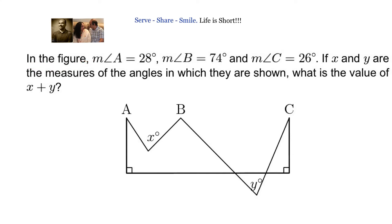In the given figure, angle A is 28 degrees, angle B is 74 degrees, and angle C is 26 degrees. If X and Y are measures of the angles in which they are shown, what is the value of X plus Y?